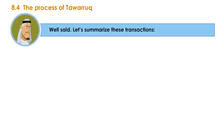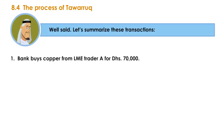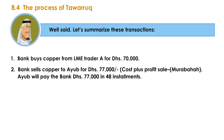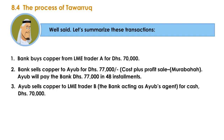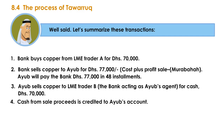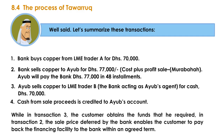Well said. Let's summarise these transactions: The bank buys copper from LME trader A for 70,000 dirhams. The bank sells copper to Ayub for 77,000 dirhams — a cost-plus-profit Murabaha sale. Ayub will pay the bank 77,000 dirhams in 48 installments. Ayub then sells copper to LME trader B, with the bank acting as Ayub's agent, for cash 70,000 dirhams. The cash from sale proceeds is credited to Ayub's account. In transaction 3, the customer obtains the funds required; in transaction 2, the deferred sale price enables the customer to repay the financing facility within an agreed term.